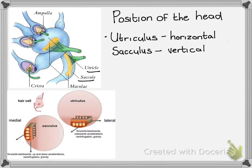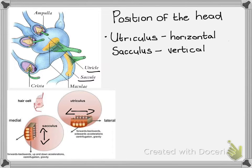By having two structures positioned in different dimensions — one horizontal and one vertical — you can sense the position of the head in different ways. The utricle senses horizontal movement, so forward, backwards, and sideways movement, whereas the saccule senses vertical movement — forward and backwards with an up and down. This allows you to sense the position of the head whether you are lying down or standing up.